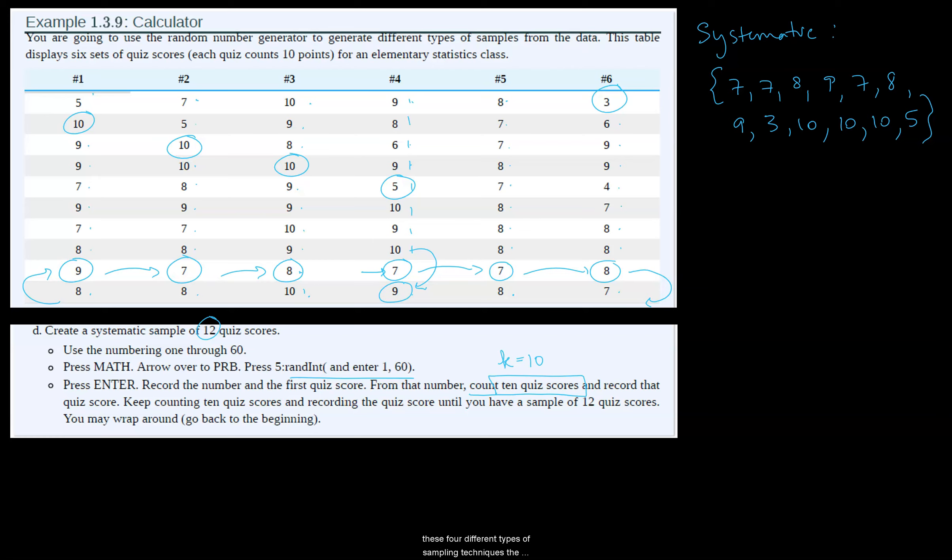So looking at these four different types of sampling techniques, hopefully you can see the differences between them and be able to recognize those different ways of sampling if you're given a scenario that describes the sampling. Can you identify which sampling technique it is?